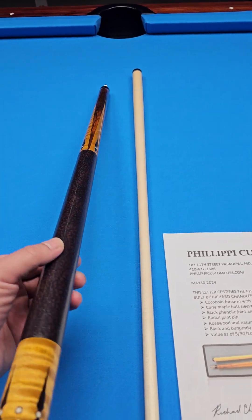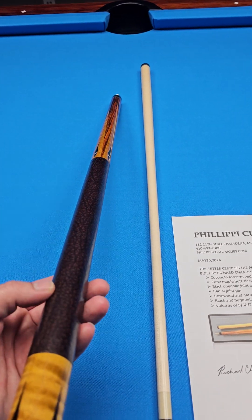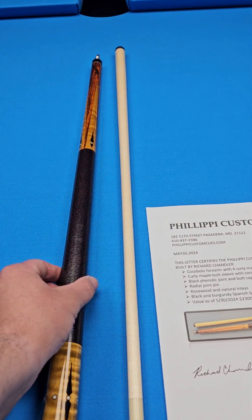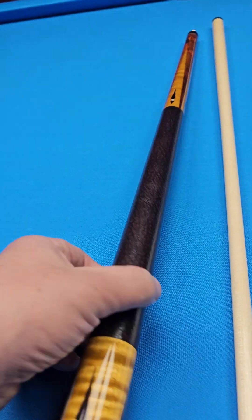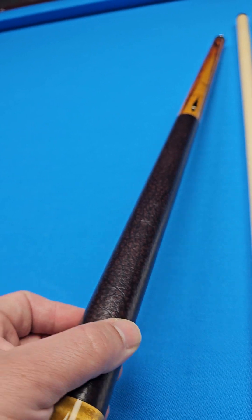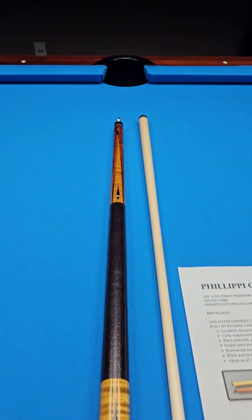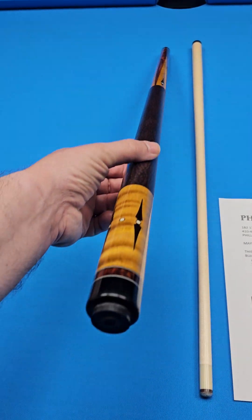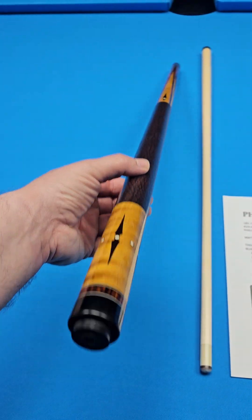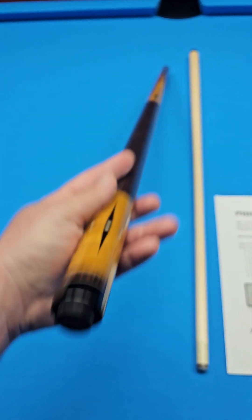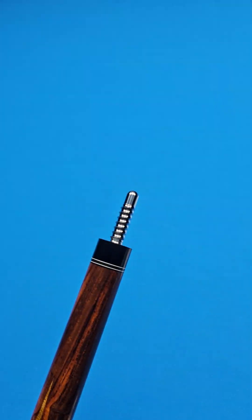So the wrap that Rick put on this cue, this is a Spanish bull wrap. I've never seen one quite like this before. I like it a lot. That is burgundy and black Spanish bull. The weight of the cue itself on the butt is 14.5 ounces. You could easily send it to him if you wanted to have weight added. It's got a radial pin.